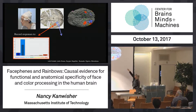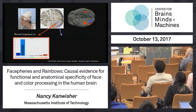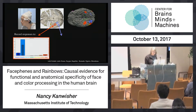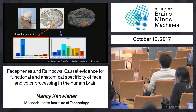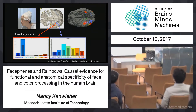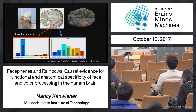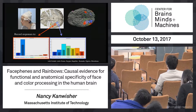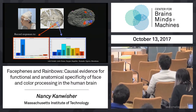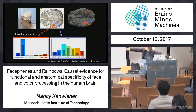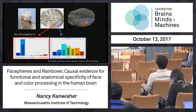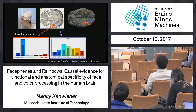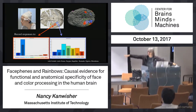Right next door to the face-preferring region is a color-preferring region. That adjacent electrode shows that across all different stimulus categories, it responds more to the color version than the grayscale version. The preference for color in the color electrode is weaker than the preference for faces in the face electrode — so my terminology is that's face-selective and this is color-preferring. It's a fine point to avoid hassle from colleagues.